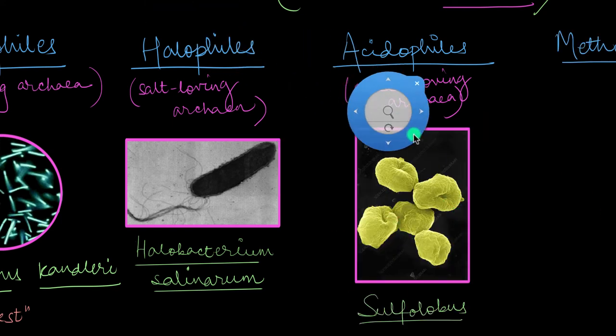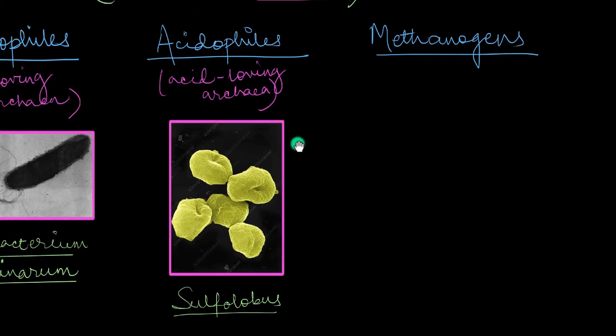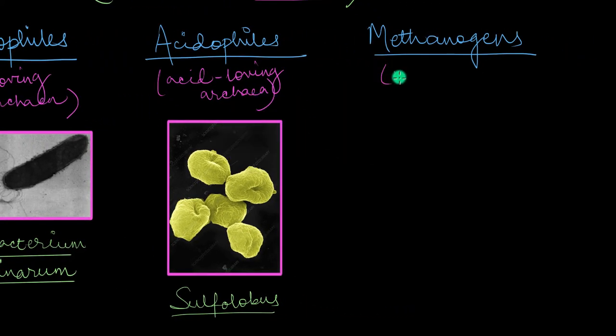And finally, we have the methanogens. Archaea that produce methane. Now we've already talked about this one before. Remember how some archaea have pseudopeptidoglycan in their cell walls? Yep, those are methanogens.